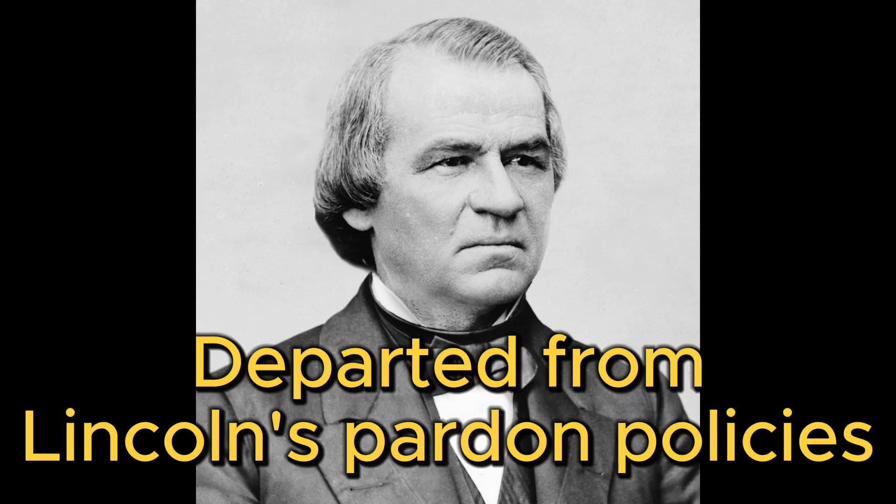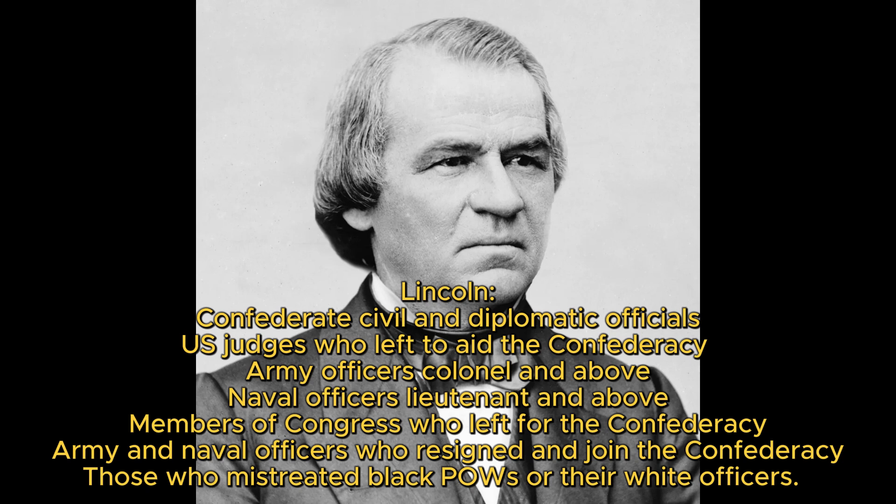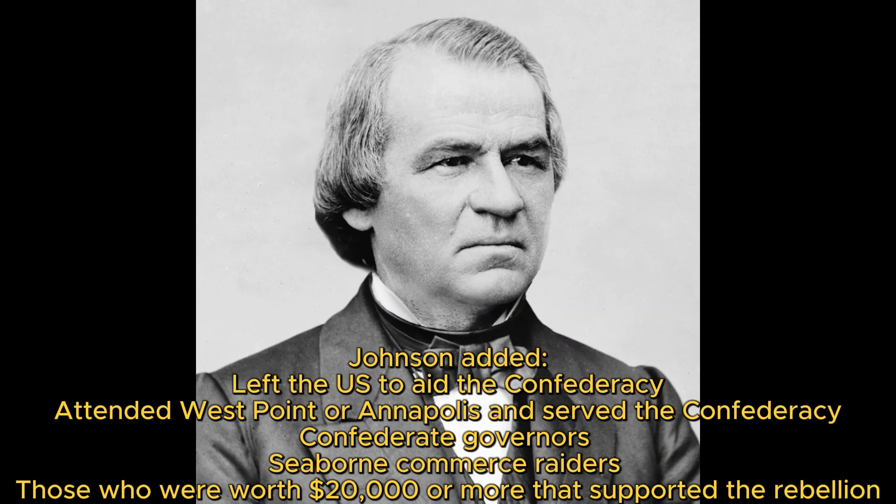Johnson made a departure from Lincoln's plan by adding entries to the list of those who would need to apply for a pardon. Lincoln had excluded Confederate civil and diplomatic officials, U.S. judges who left to aid the Confederacy, Army officers above Colonel, Naval officers above Lieutenant, members of Congress who left for the Confederacy, Army and Naval officers who resigned their commissions and joined the Confederate military, and those who mistreated black prisoners of war or their white officers. Johnson included additional groups, such as those who left the U.S. to aid the Confederacy, individuals who attended military academies and then served the Confederacy, Confederate governors, seaborne commerce raiders, those who raided the U.S. from Canada, and those worth $20,000 or more who supported the rebellion, among others.